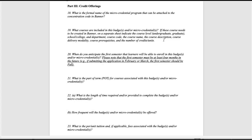Part three of the proposal form should only be completed by those proposing credit badges or credit micro-credentials. Question 18 asks for the formal name of the micro-credential program to attach to the specific concentration code in Banner. If you are only proposing a badge and not a micro-credential, you can leave question 18 blank. Question 19 asks what specific courses will be associated with the badges and/or micro-credential being proposed. If these courses do not currently exist in Banner, a separate sheet provides the information needed to allow the registrar to create each of these courses.